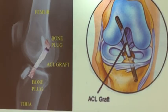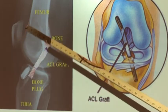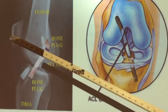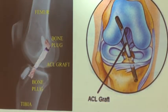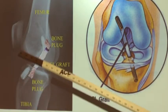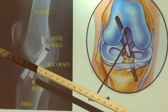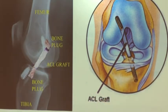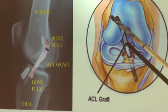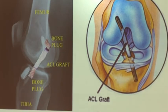The treatment for ACL tear is surgery. They take a ligament from somewhere else in the body and make a new ligament out of it, connecting it where the old ligament was supposed to be. As you can imagine, there's a long recovery time, especially for a professional athlete.